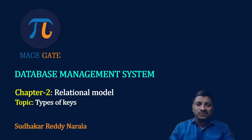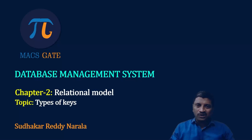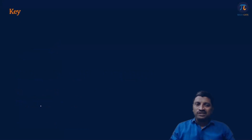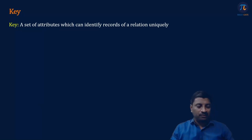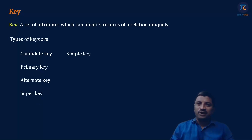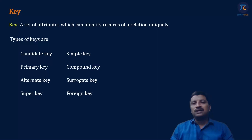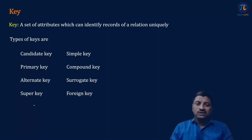Hi, welcome to the DBMS course. In this session we will discuss about types of keys in the relational model. A key is a set of attributes which can identify the records of a relation uniquely. Types of keys are candidate key, primary key, alternate key, super key, simple key, compound key, surrogate key, and foreign key. Let us discuss each of these keys one by one.